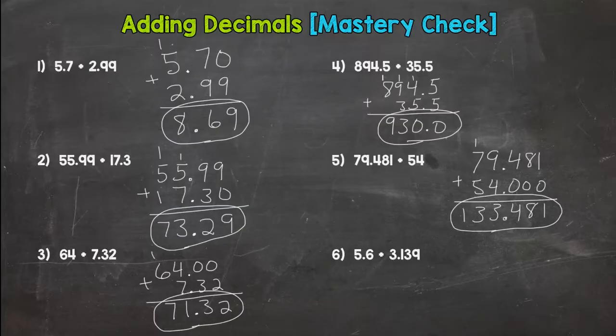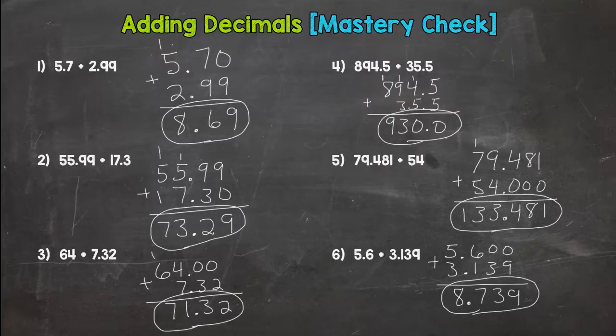And then let's wrap it up with number six here. Placeholder zeros. Add them up. Bring the decimal down. Eight. Eight and seven hundred thirty-nine thousandths.